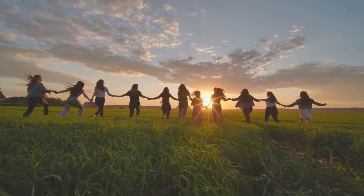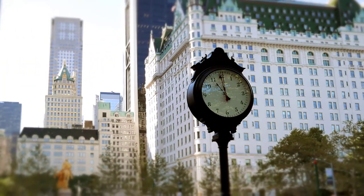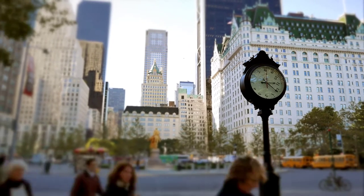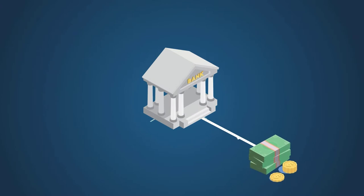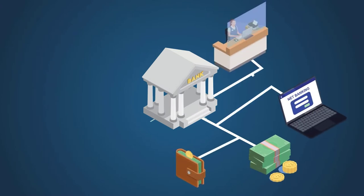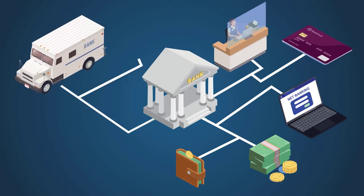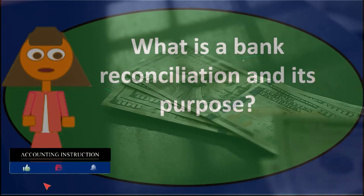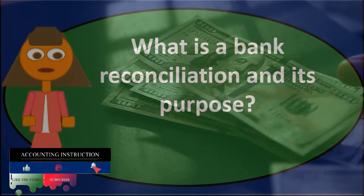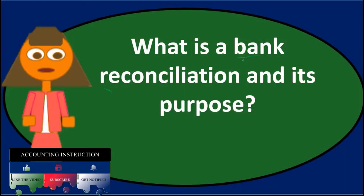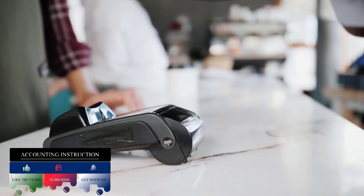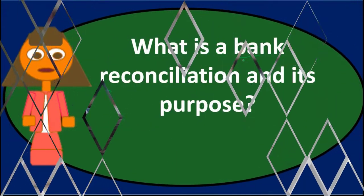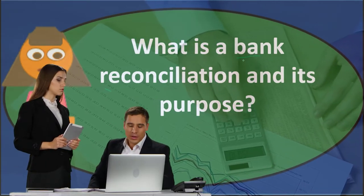Even if everything was recorded perfectly, the balances won't match due to timing differences. That's what we want to get the bank reconciliation down to — timing differences. These include outstanding checks, which are checks we wrote by the end of the period that haven't yet cleared the bank, and outstanding deposits, which are deposits we made that haven't cleared the bank yet. We add outstanding deposits to the bank balance side to reconcile.